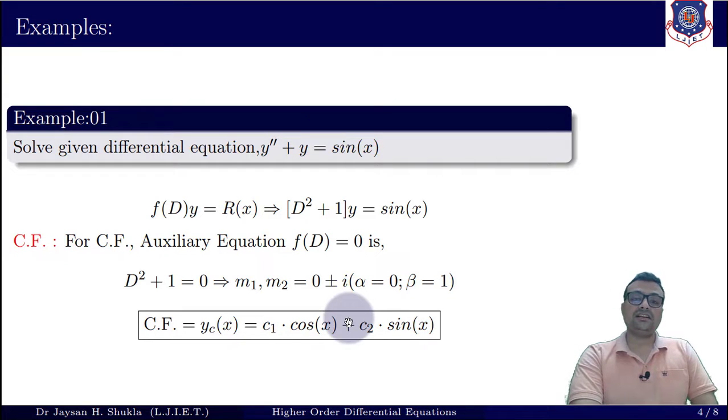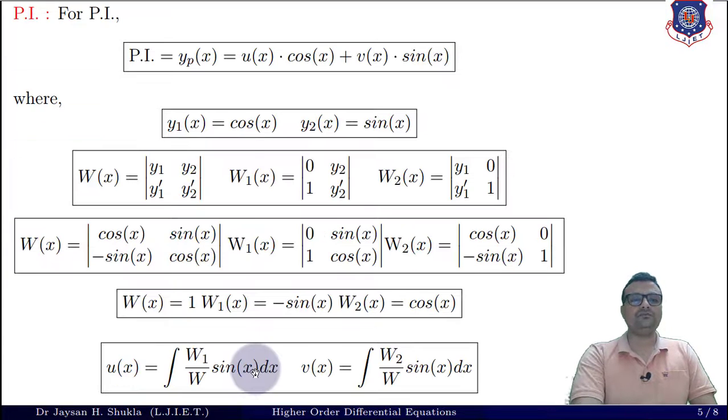Now considering real part 0, imaginary part 1, for the third case of complex non-repeated complementary function, I will get CF as c₁cos(x) + c₂sin(x). Here actually this solution is e^(αx)[c₁cos(βx) + c₂sin(βx)] with α = 0 and β = 1. Now this is the technique which is known as method of variation of parameters.